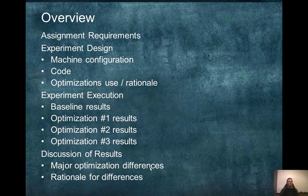There are four sections to this presentation. The first is the assignment requirements, where I discuss the outline of the requirements for Lab 3. Then I'll go over the experiment design — the setup, the code I used, and the optimizations I chose and why. For the experimental execution section, I'll discuss the baseline results and the results for the three optimizations. And I'll finish up by talking about the major differences I saw between the optimizations and the rationale for those differences.